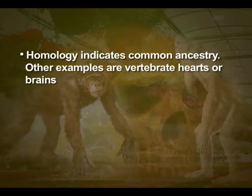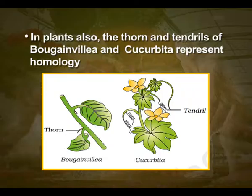Other examples are vertebrate hearts or brains. In plants also, the thorns and tendrils of bougainvillea and cucurbita represent homology. Homology is based on divergent evolution, whereas analogy refers to a situation exactly opposite.